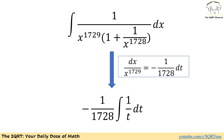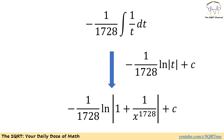Now using what we have, the integral becomes negative 1 over 1728 times the integral of 1 over t dt, which can be answered very easily. The integral of dt over t is ln of absolute value of t plus a constant c. Replacing t gives minus 1 over 1728 times ln of absolute value of 1 plus 1 over x to the power of 1728, plus c. And that's our final answer.